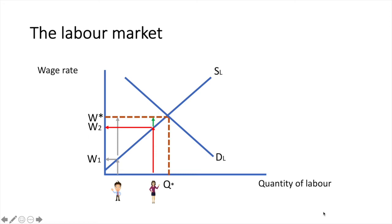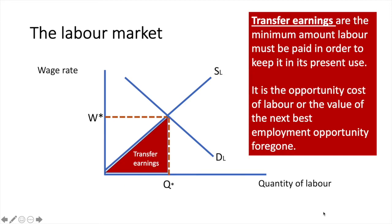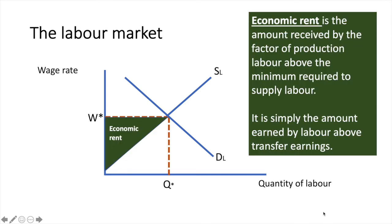Let me specifically define these two terms: transfer earnings and economic rent. Transfer earnings are the minimum amount labour must be paid in order to keep it in its present use. It is the opportunity cost of labour, or the value of the next best employment opportunity forgone. Transfer earnings are represented in this diagram by the area in red. Economic rent is the amount received by the factor of production labour above the minimum required to supply labour. It is simply the amount earned by labour above transfer earnings, represented by the area shaded in green.